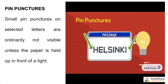Pin punctures. Small pin punctures on selected letters are ordinarily not visible unless the paper is held up in front of a light. So you take a pin and puncture the paper at specific letters. Normally it is not visible, but if you hold it to the light you can see where the pin punctures are — those mark the secret hidden letters.